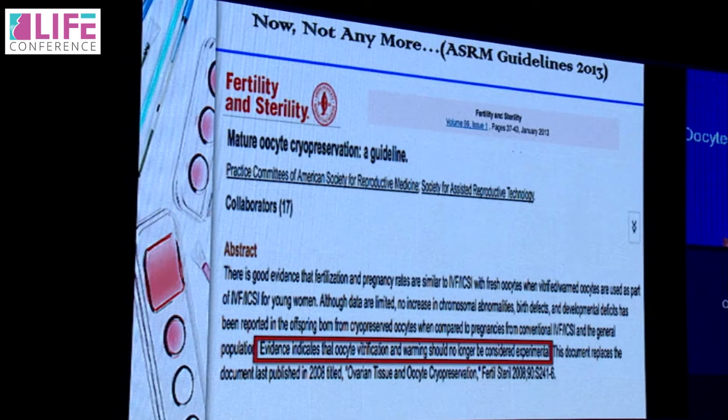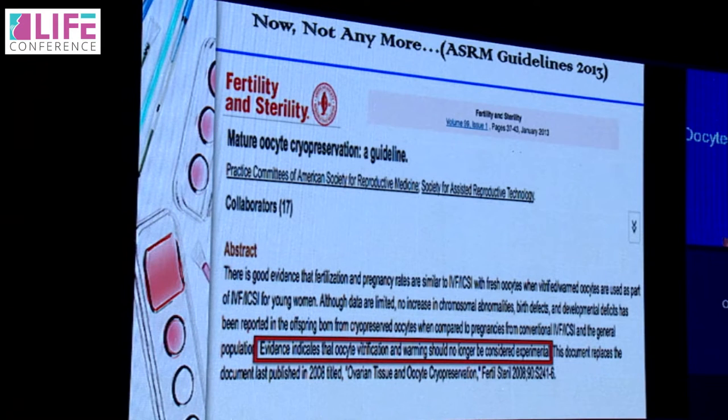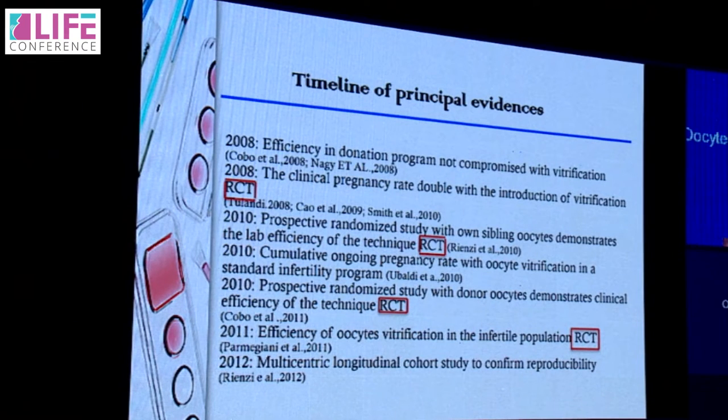The ASRM declared oocyte vitrification as no longer experimental in 2013. This change is based on a large body of evidence in literature starting from 2008 onwards, and many of these are randomized controlled trials — representing a very high level of medical evidence. ICSI and embryo cryopreservation were introduced into clinical practice without randomized controlled trials, but we now have so many RCTs for oocyte vitrification, and it is all this data that has made ASRM change its mind.